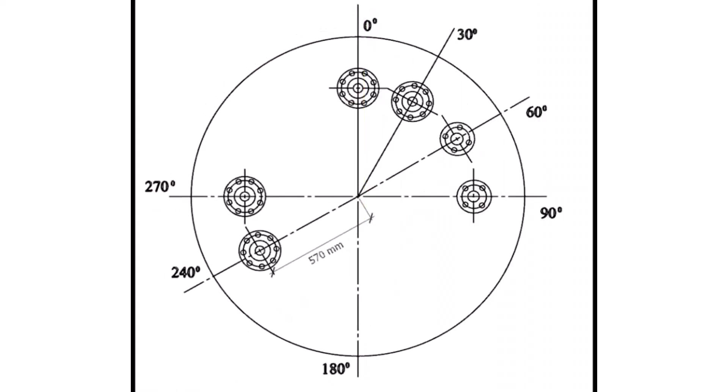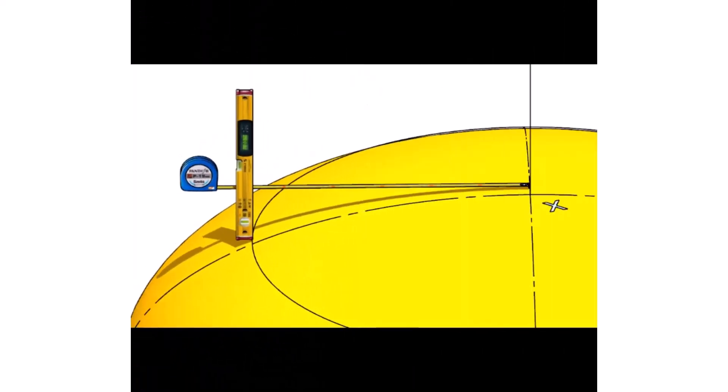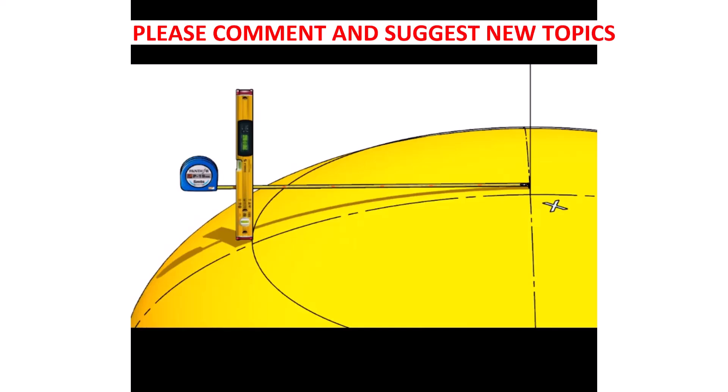Check the radius of the nozzle center. Don't mark the given radius slant on the dish end. Hold a level bottle vertically and then mark the given distance straight, as shown.